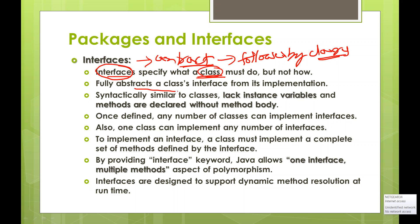What else does an interface do? It abstracts all the methods inside — they are implicitly abstract methods. Syntactically they are similar to classes, but the difference is they won't have instance variables. All the methods are declared without a body.